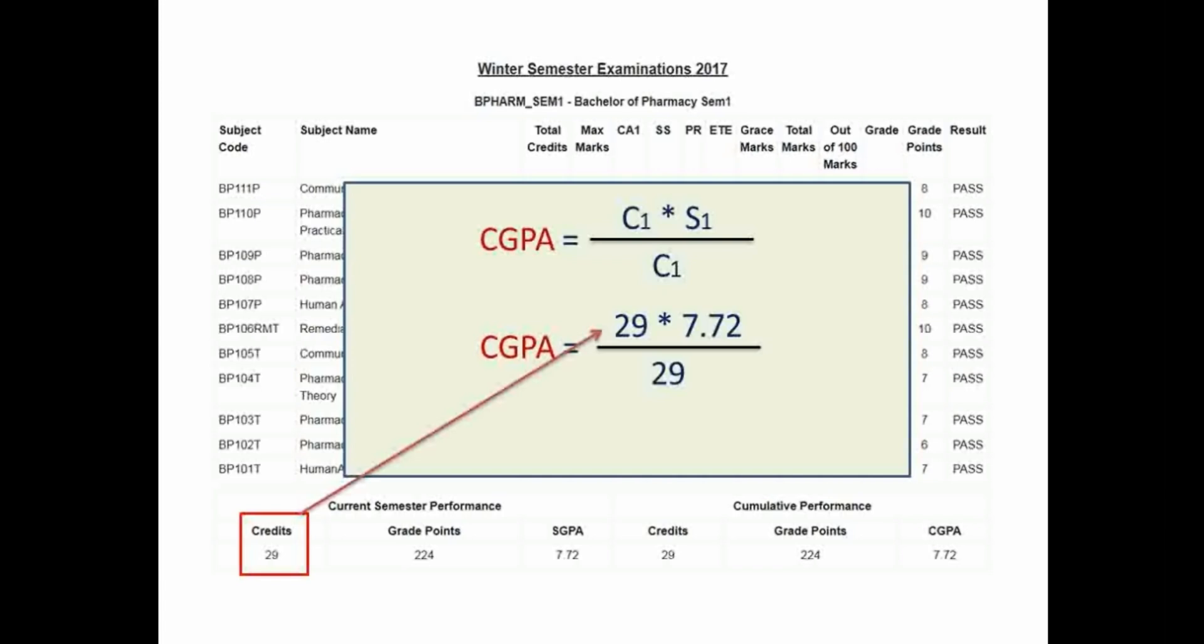So 29 is placed over here since it is the total credits of semester 1, and SGPA of semester 1 is 7.72 divided by C1 that is 29. So by calculation of these values you will get the answer of CGPA that is 7.72, which is the CGPA of semester 1.